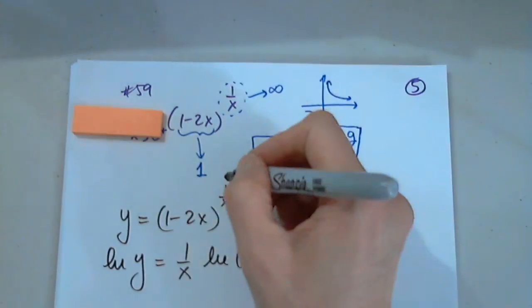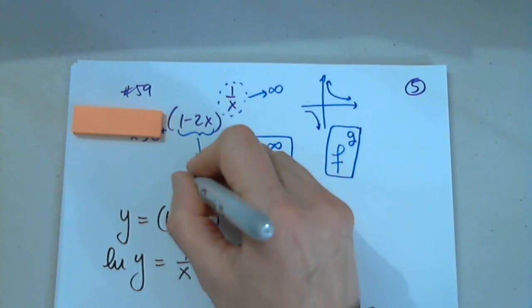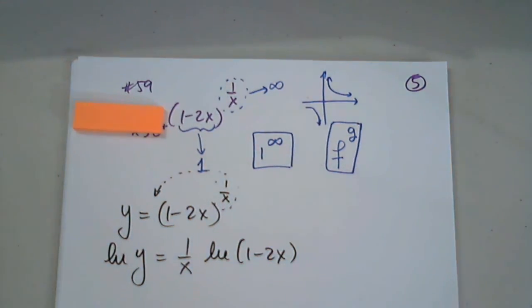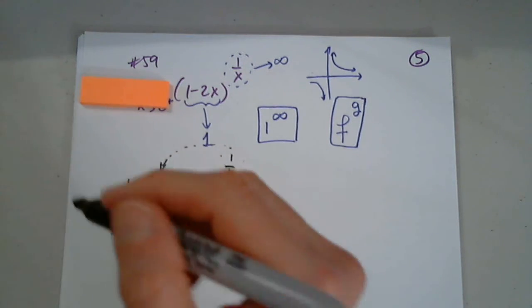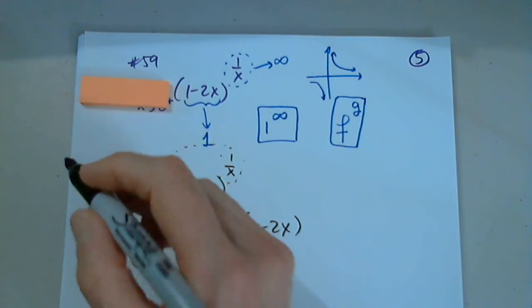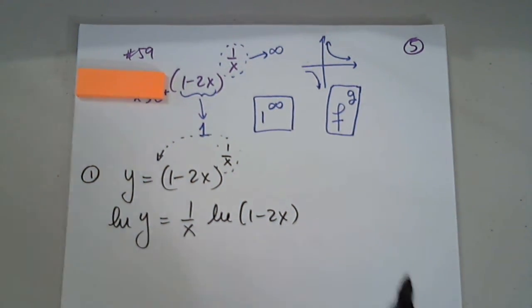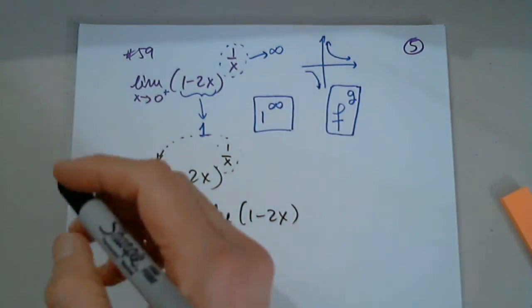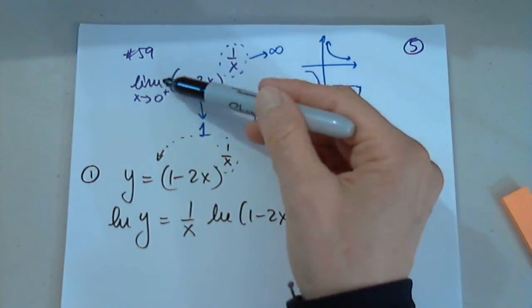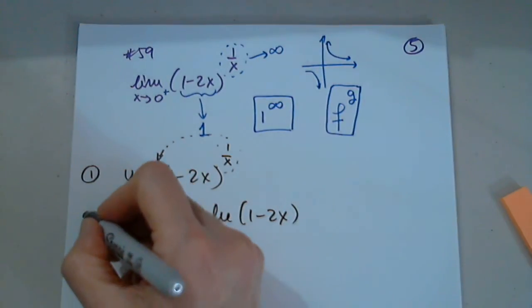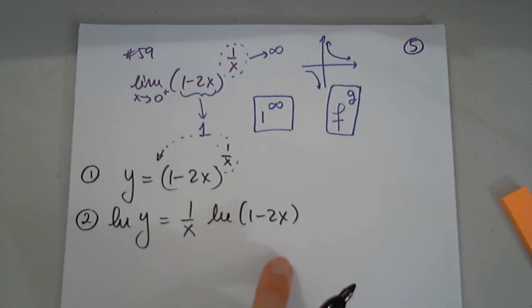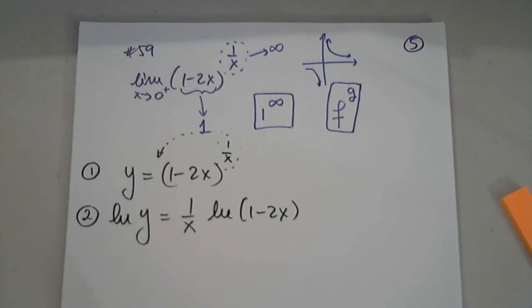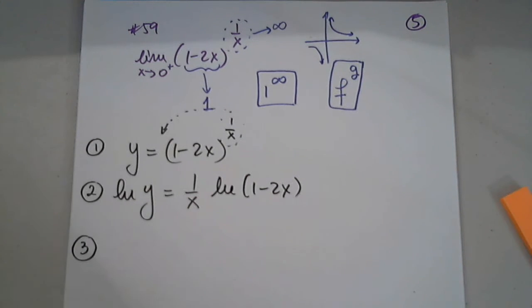So, we take this function, we call it y, we apply natural log to both sides. When I apply natural log to this side, the power goes in front as a factor, and I get this. So, this is step number one. I'm going to try to, at least at the beginning, identify the steps, so everyone can follow easily. So, in step number one, I named the function y. In step number two, I applied natural log to both sides. In step number three, I applied limit to both sides.